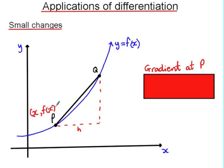because p is located on this curve, y equals f of x, then the coordinates of q are x plus h, f of x plus h.